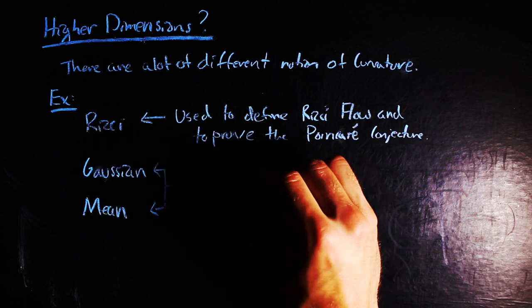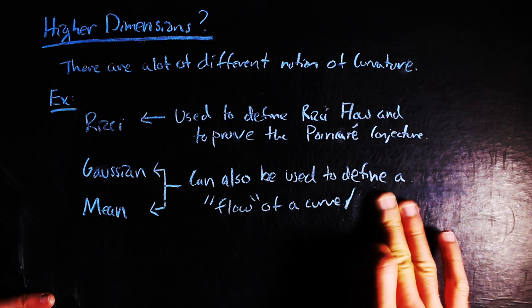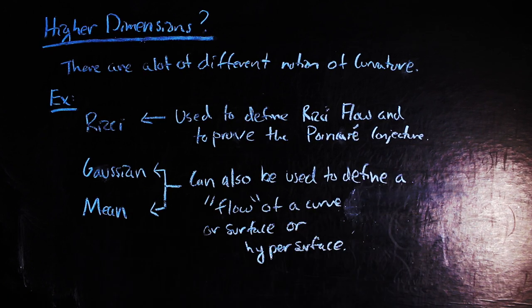Other types of curvature that are used in higher dimensions include the Gaussian or mean curvature, to name a couple. And they can also be used to define flows of curves and hypersurfaces as well.